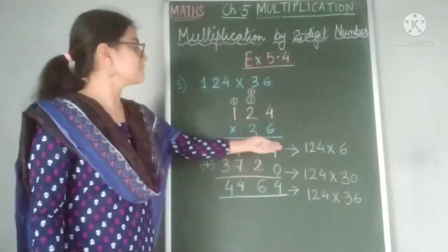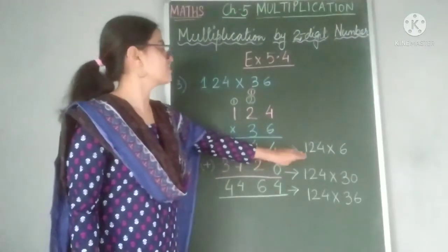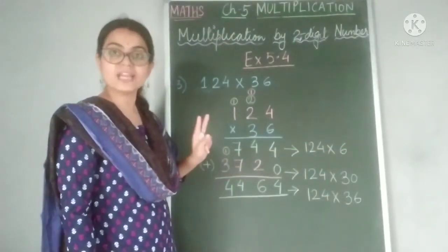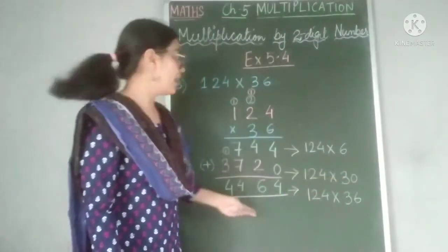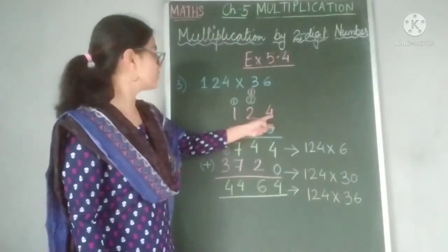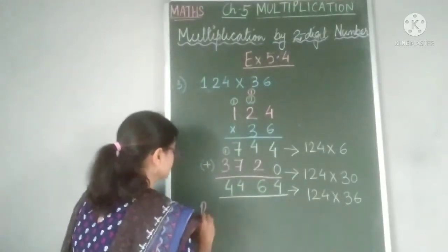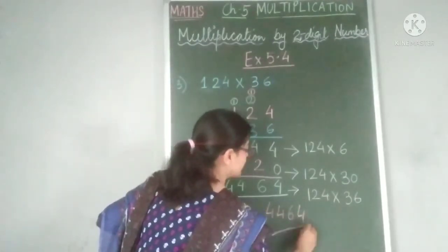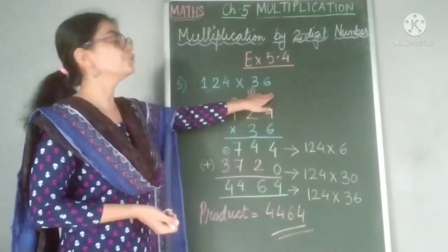So our final product here is equal to 124 into 36 equals 4464. Here you can see the step by step multiplication. In the first step, we have obtained the first partial product, 744, which is the result of 124 multiplied by 6. In the second step, we have obtained the second partial product, 3720, which is equal to 124 multiplied by 30. And finally, after adding the first and the second partial product, we have got the final answer, which is equal to 124 multiplied by 36, that is 4464. This is our final answer. In this way, we perform the multiplication by a two-digit number.